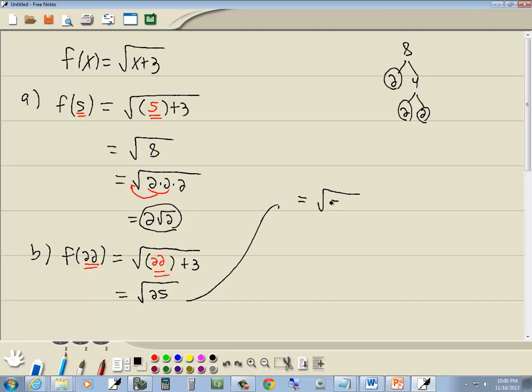Now 25 is 5 times 5. And we're dealing with square roots so we're looking for a pair of somethings. So here's a pair of 5's so they're going to come out in front as a single 5. So our answer to part b will be 5.